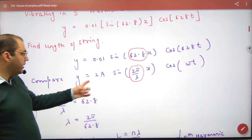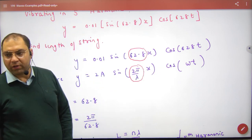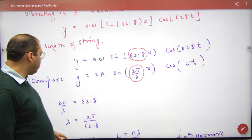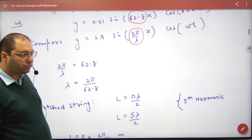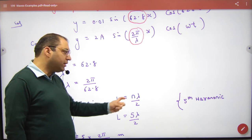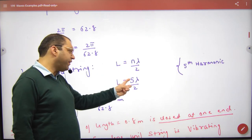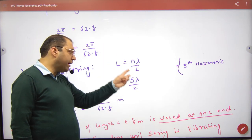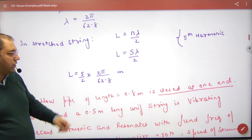Compare it with this equation. 2pi by lambda equals 62.8, so lambda can be found. For the stretched string, the relationship between length and lambda for the fifth harmonic where n equals 5 allows us to calculate the length.